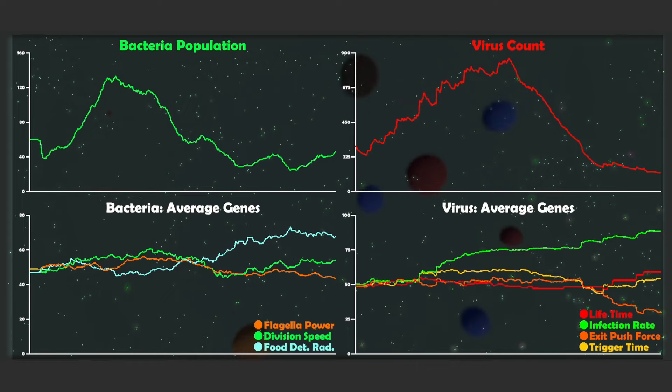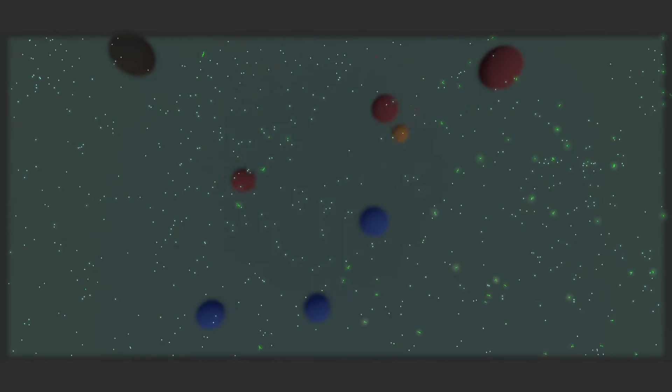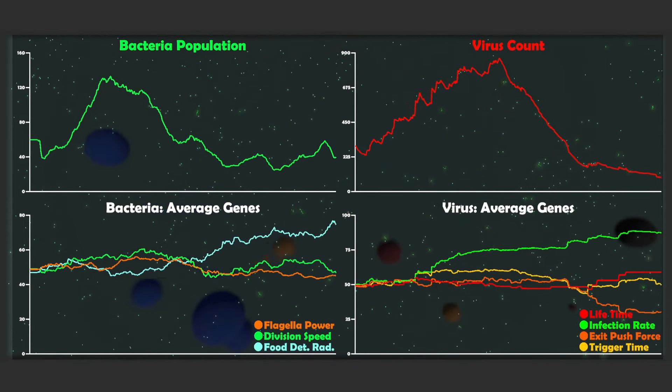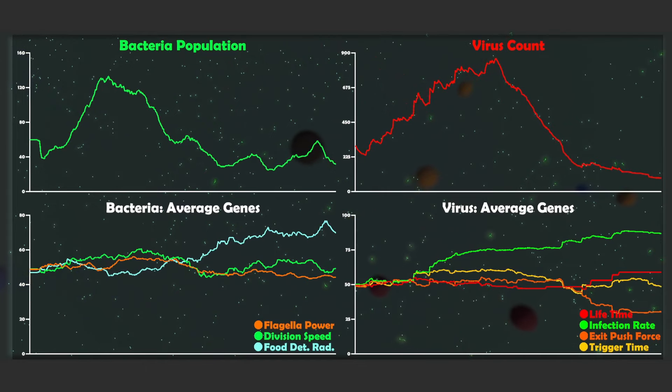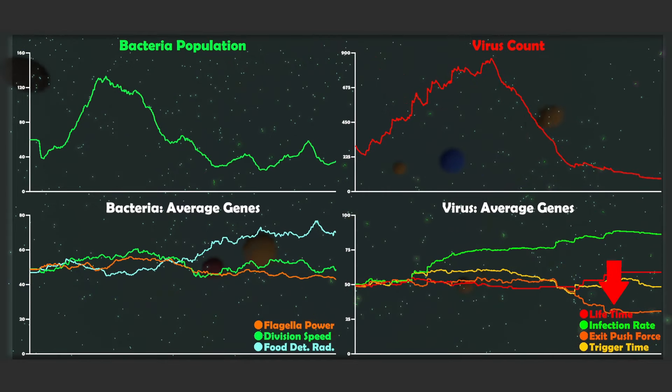The trigger time gene, I think will need some more help. So in the next run, we will talk about that. But I think the most interesting one is the exit push force gene, where it almost looks like a lower value was better, which might be the case, since maybe I set the value so high that the virus is being spread around outside of the simulation.